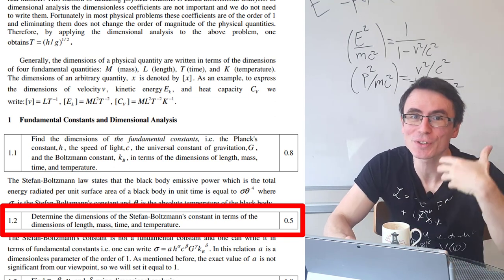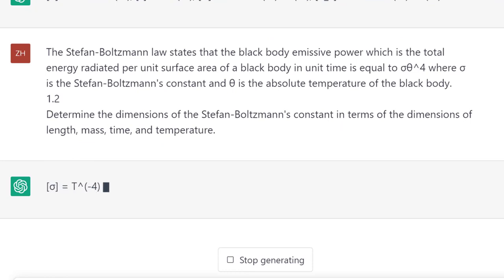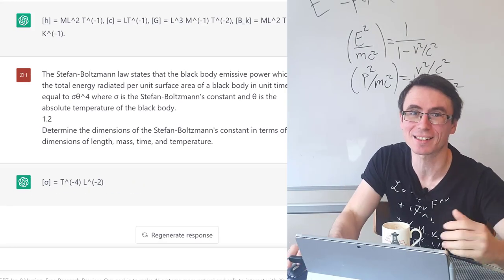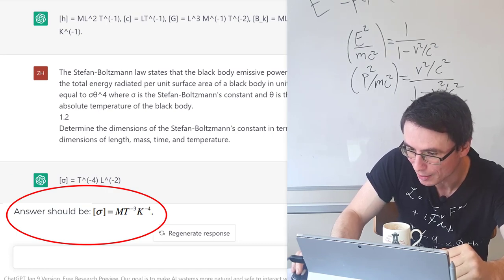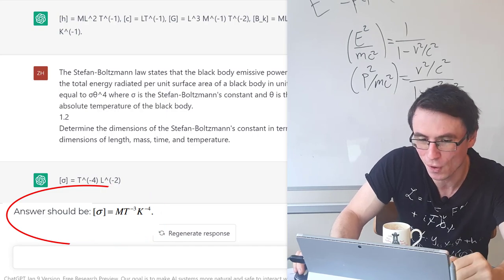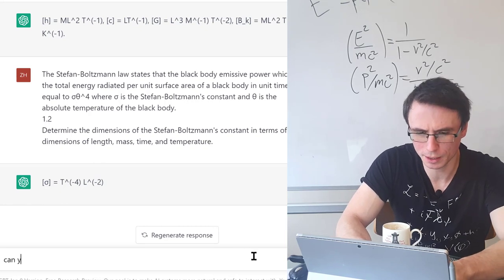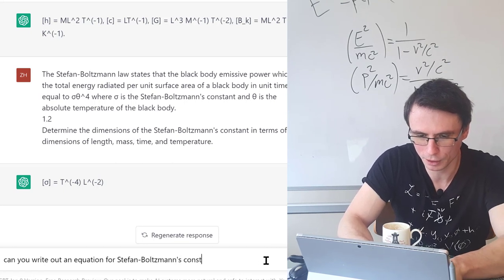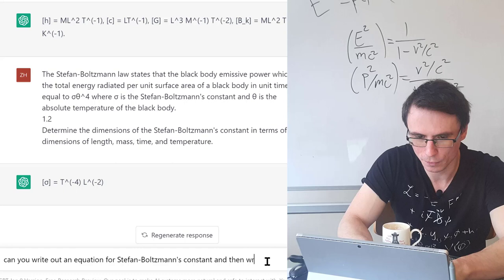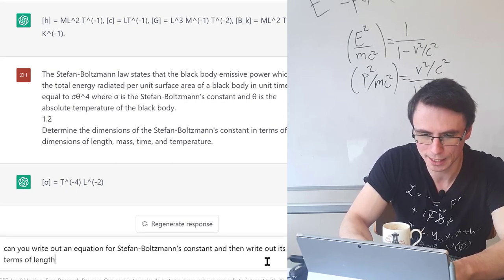Next, we need to determine the dimensions of the Stefan Boltzmann constant. This is not the correct answer. As you can see, the dimensions are given by the dimensions of mass times T to the negative 3, K to the negative 4. Would I be able to coach it to get the correct answer? So what if I write, can you write out an equation for Stefan Boltzmann's constant and then write out its dimensions in terms of length, mass, time and temperature?